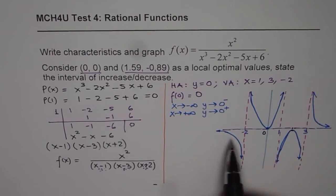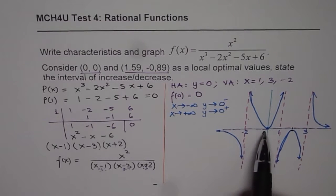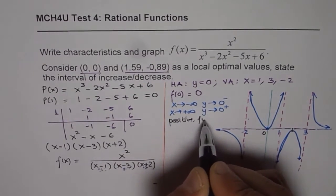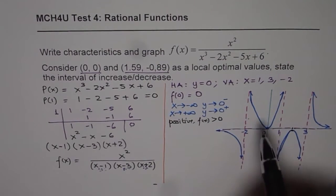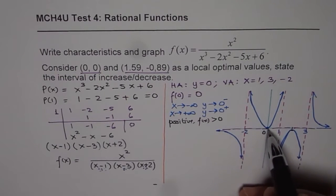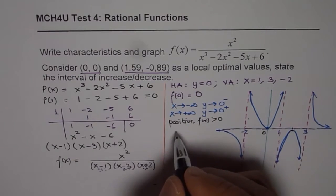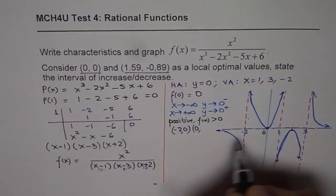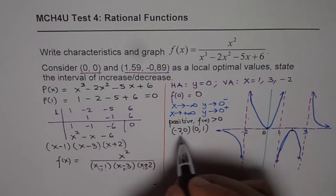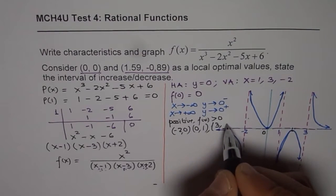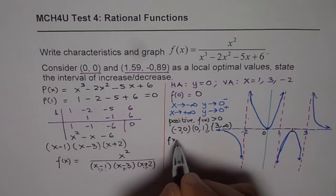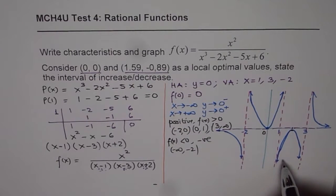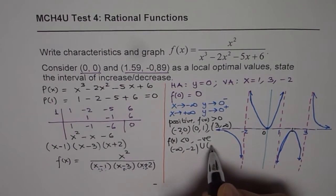From the graph we can write the sign characteristics. f(x) is greater than 0 on the intervals from minus 2 to 0 and from 0 to 1, and also from 3 to infinity. f(x) is less than 0 on the intervals from minus infinity to minus 2, and from 1 to 3.